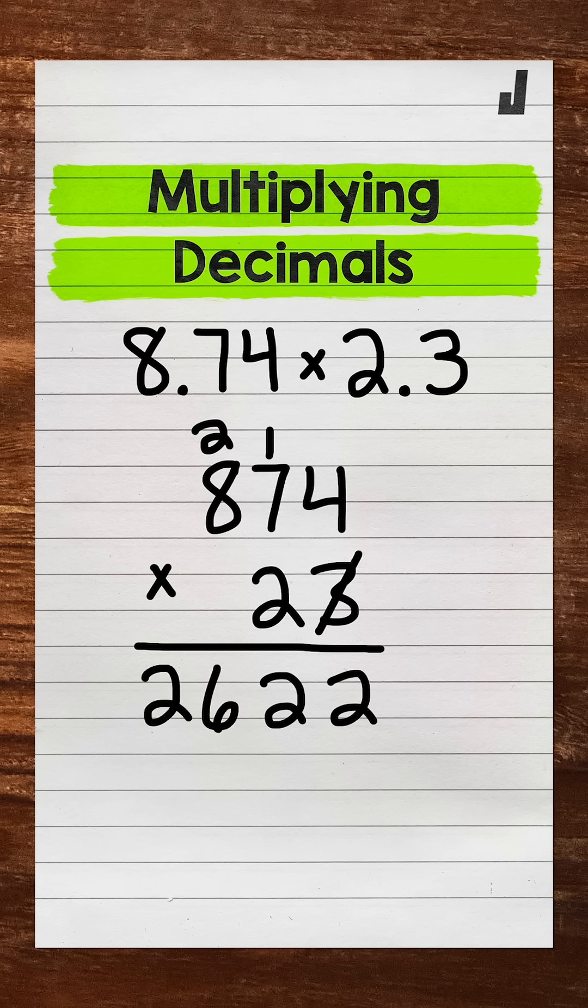We are done with this 3, this 1, and this 2. We're moving over one place to the left, and now we are going to be working with that 2. So we need our placeholder 0 here. Now we multiply. 2 times 4 is 8.